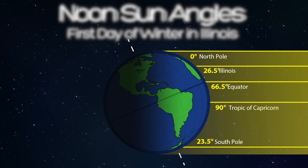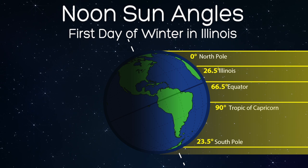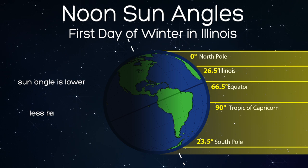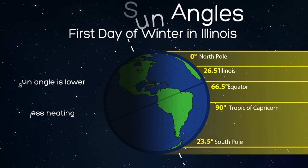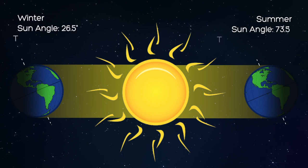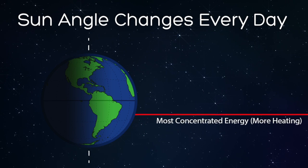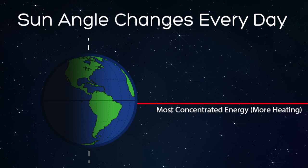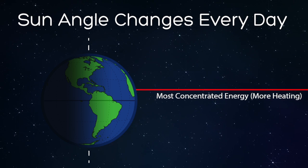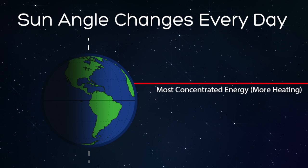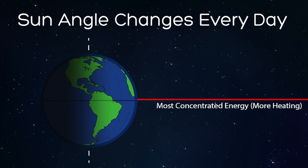Six months after our summer, the Earth has moved and now the north half of the Earth is tilted away from the Sun. The Sun angle is lower with less heating — we're in winter. Think about where the noon Sun is in the sky in summer compared to winter. You'll notice the noon Sun is much higher in summer than in winter. Each day, the Sun angle changes ever so slightly. After the first day of winter, the Sun gets a little higher each day until the first day of summer. After the first day of summer, Sun angles slowly get lower.